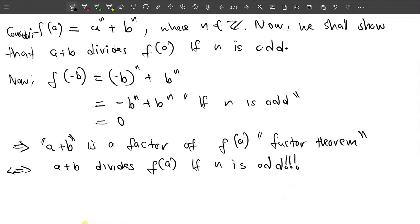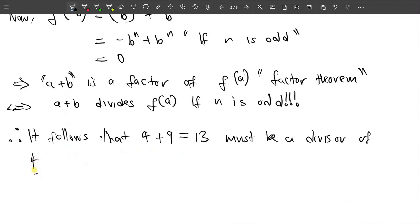So this is what we have achieved just by considering this polynomial. So what then follows from this? Therefore, it follows that 4 + 9 = 13 must be a divisor of 4^35 + 9^35, which equals 2^70 + 3^70, which was given. And the assertion follows.